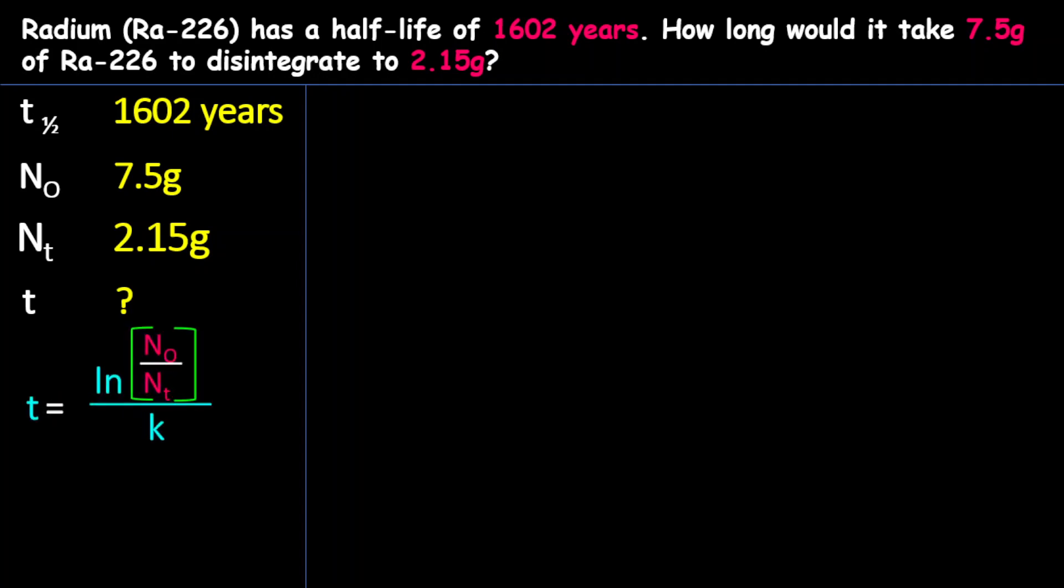The first equation is to find time. And time is equal to the natural log of the original mass divided by the final mass, all divided by the constant, or you may say the constant rate.